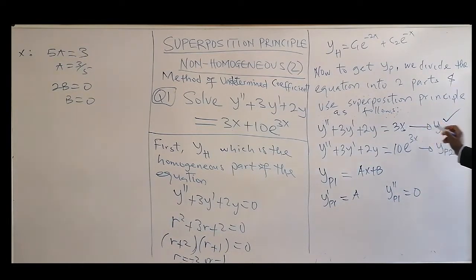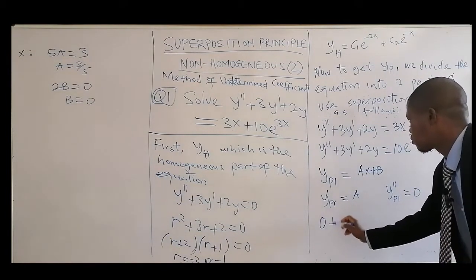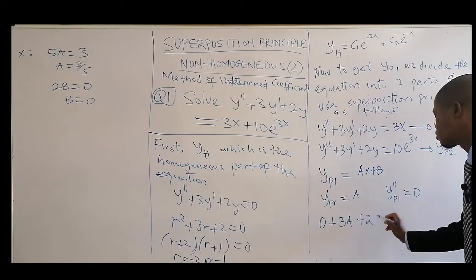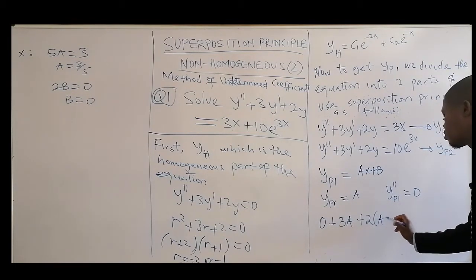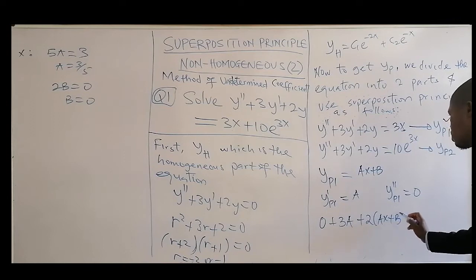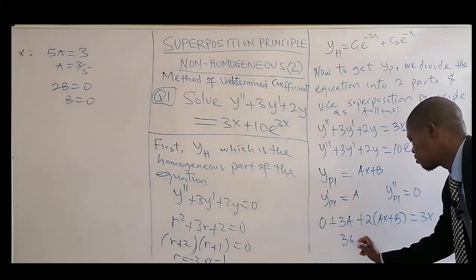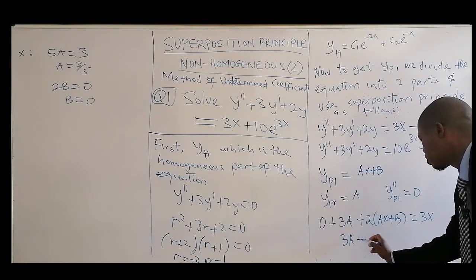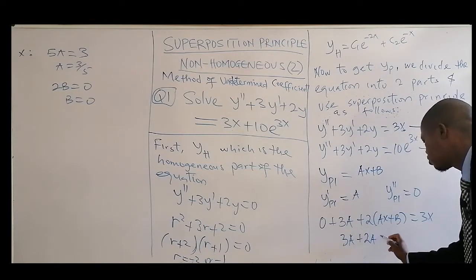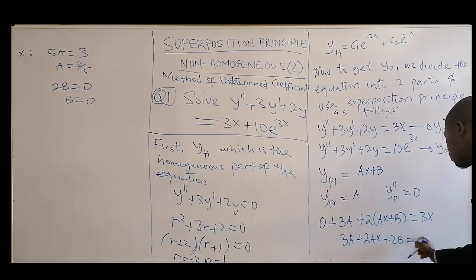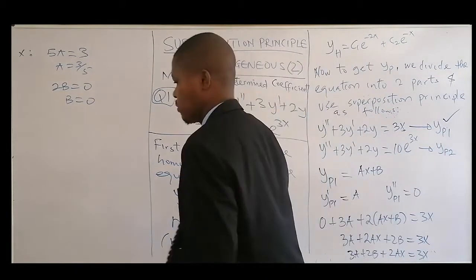Substitute back to this place. The YP1 second differential is 0, that's 3 times the first differential 3A, then plus 2 times Y, which is Ax + B, equal to 3x. And this will be equal to 3A plus 2Ax plus 2B equal to 3x.